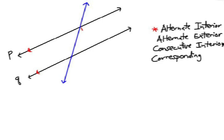Here's one pair. And here's another pair that I will circle. What do you know about alternate interior angles? They're congruent. So if this angle here is 30 degrees, this angle here would also have to be 30 degrees.